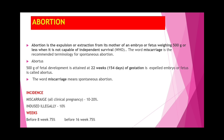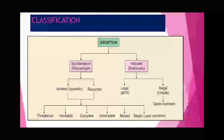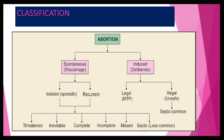The incidence of miscarriage is 10 to 20 percent in all clinical pregnancies. Before 8 weeks it will be 75 percent, and before 16 weeks also 75 percent chances of abortion. Abortion is classified into two parts: spontaneous and induced.